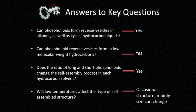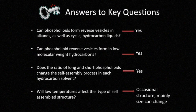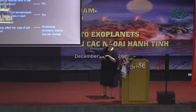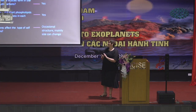So we come to the answers to the key questions. Can we have reverse vesicles in alkanes — can they be low molecular weight alkanes? The answer is yes. The main factor was the ratio of the types of long and short phospholipids used. Will the low temperature affect the type of self-assembly? Occasionally, but mainly you just get slight changes in the size of the vesicles. That was just a general overview of what I've done, and I just hope I've convinced some of you that work into non-terrestrial based life is worth pursuing and isn't entirely hopeless.